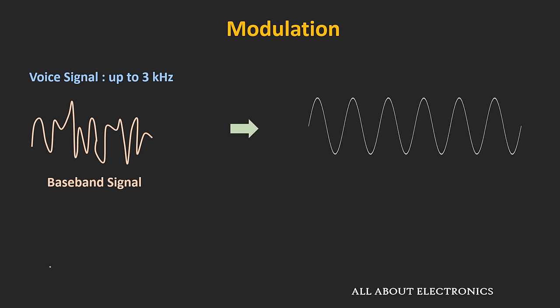With the help of a high frequency periodic signal, the baseband signal can be transmitted. This high frequency periodic signal which carries the baseband signal is known as the carrier signal. The question is: how to impose the message or baseband signal onto the carrier signal? Any signal has three basic properties — amplitude, phase, and frequency. Modulation is the process where one of these properties of the carrier signal, like amplitude, phase, or frequency, is changed according to the baseband signal. Based on which property is changed, there are different types of modulation.